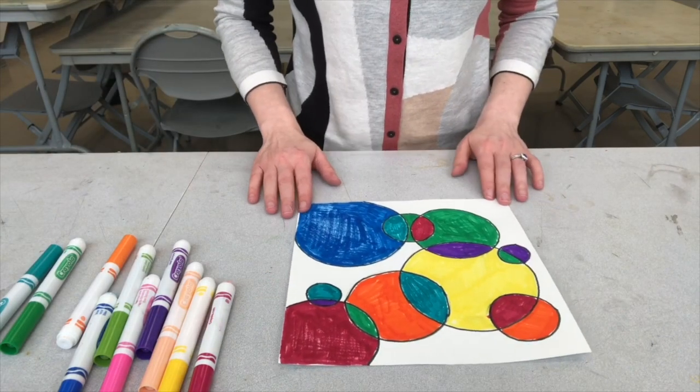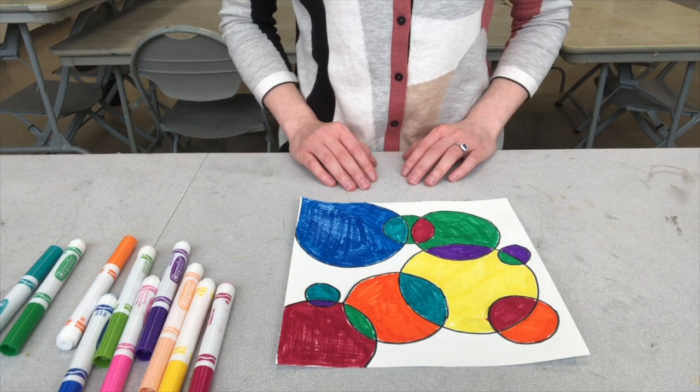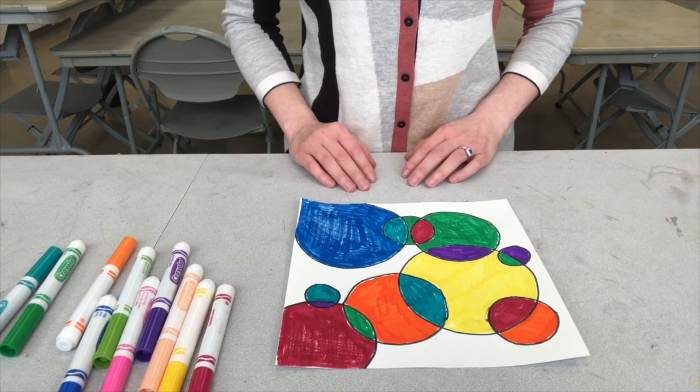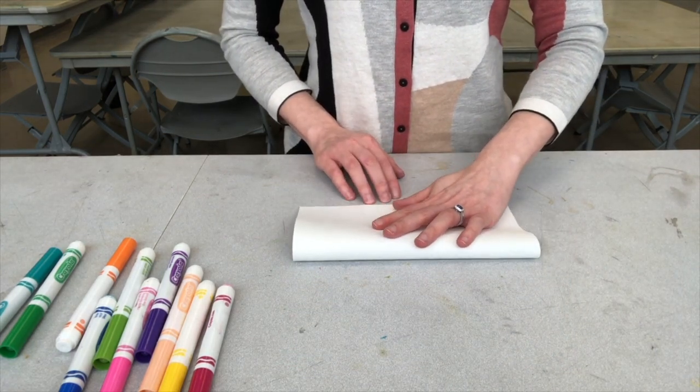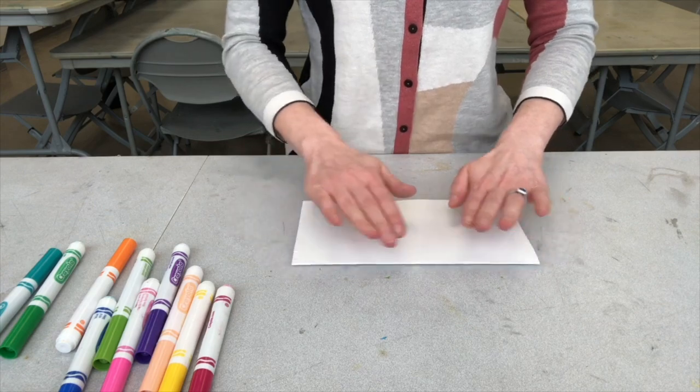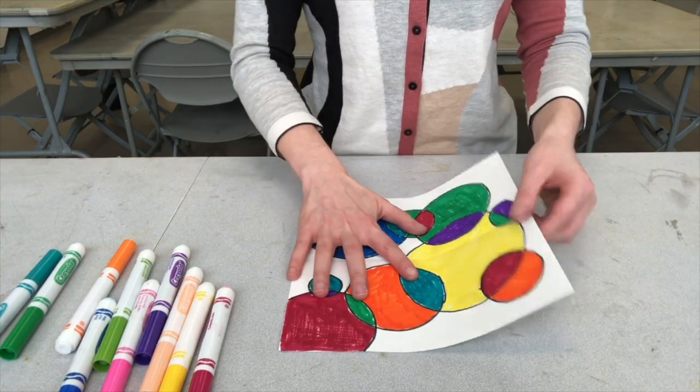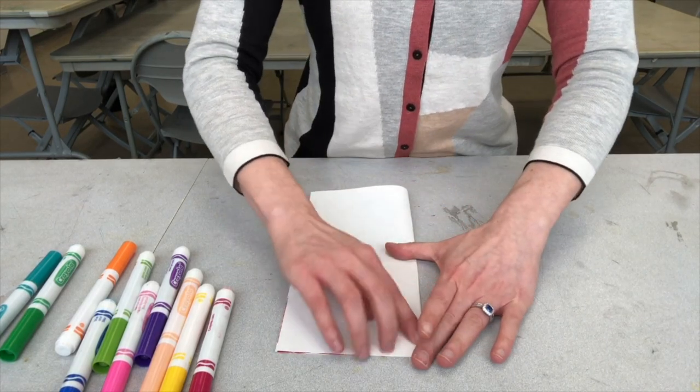So here is my drawing. Once you have all your circles colored in, we are going to cut this into quarters. The easiest way to do this is by folding. So we are going to fold the paper in half and get a nice crease. We are going to open it up and fold it the other way in half. And again, get a nice crease.